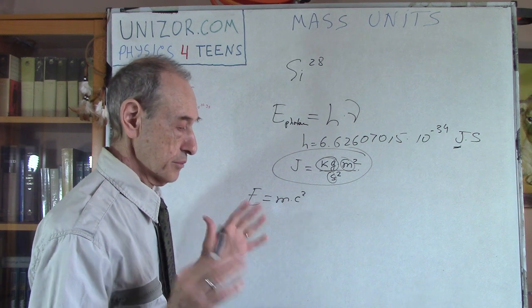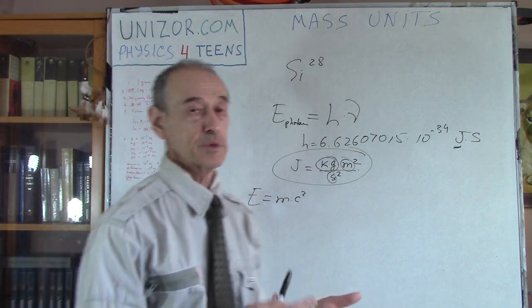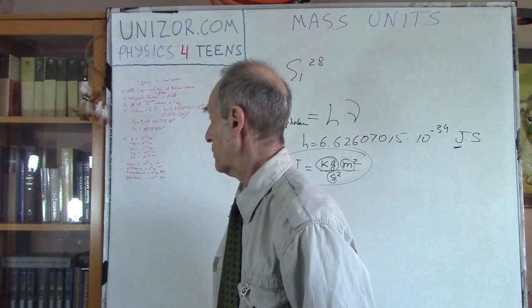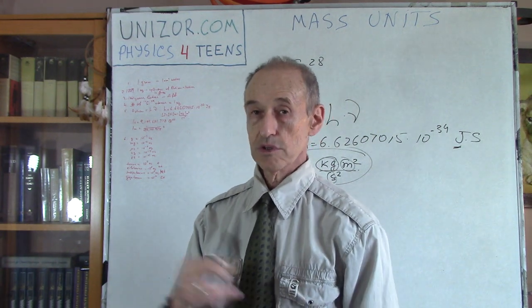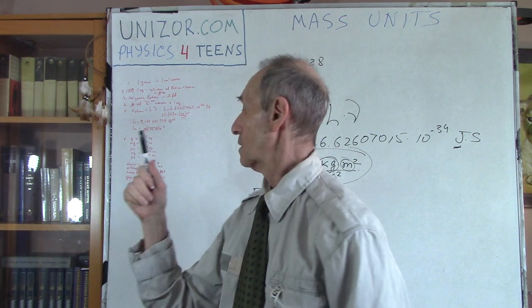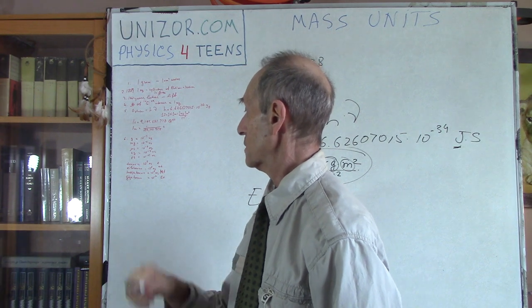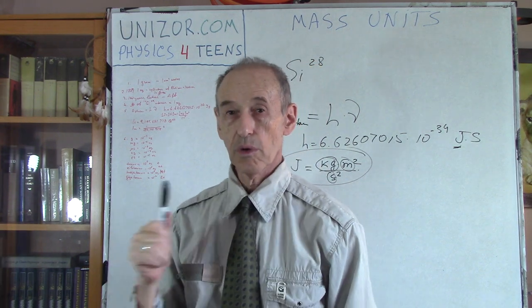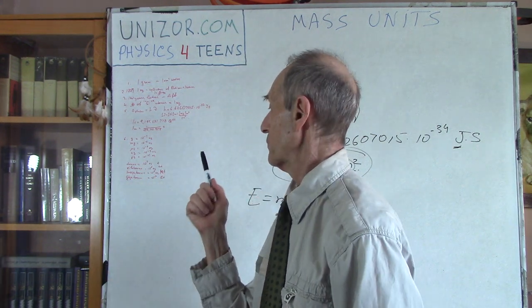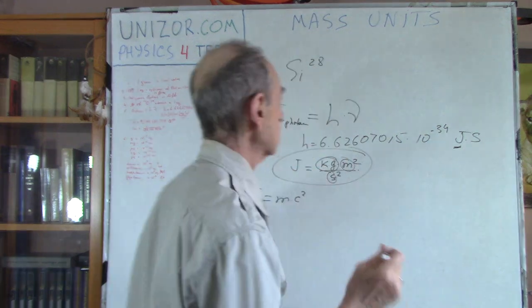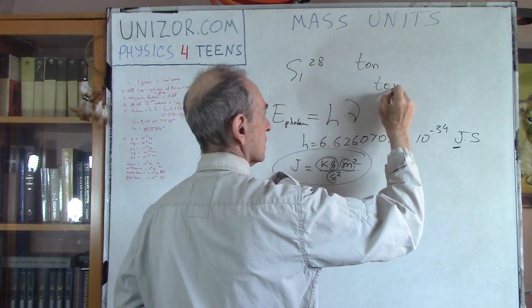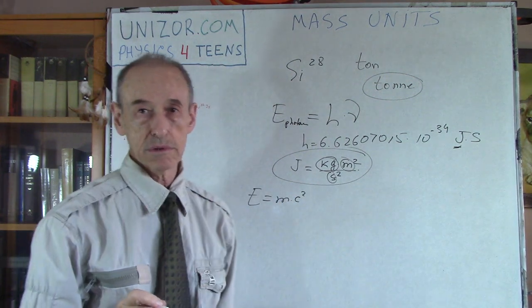Now, if we have defined what is a kilogram, obviously, we have a gram, which is one thousandth of a kilogram. We have a milligram, which is one thousandth of a gram, which is one millionth of a kilogram. We have a microgram, which is another thousandth of the previous. Every time, we just divide it by a thousandth of a kilogram.